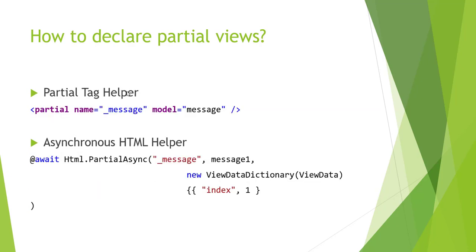The second way is the partial tag helper. In the .cshtml file, we can define a partial tag with the name of the partial view — underscore message — and pass whatever model you want. Another way is the asynchronous HTML helper, where you can use await HTML.PartialAsync, passing the partial view name, the model object, and optionally a view data dictionary.